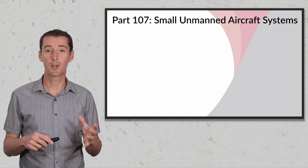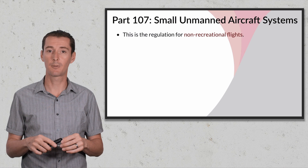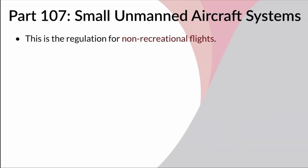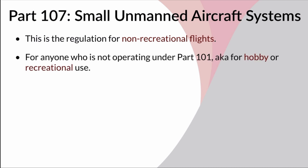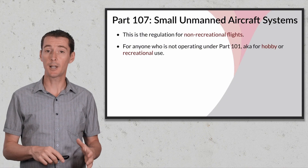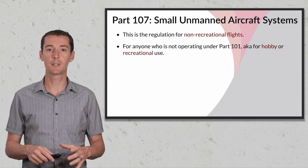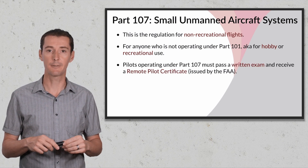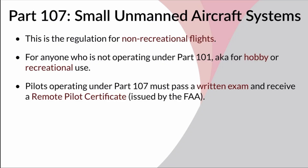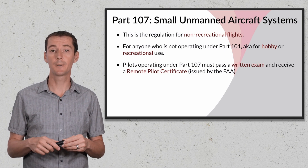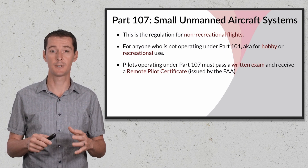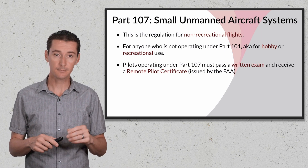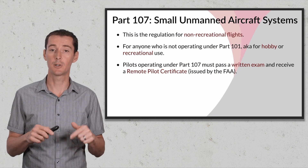The next thing we have is Part 107 — small unmanned aircraft regulation. This is the regulation for everything that is not recreational. Part 101 is recreational flight; Part 107 is non-recreational flight. Anyone who's not operating under Part 101, anyone who's not doing stuff for fun, falls under Part 107. If you operate under Part 107 you have to get a remote pilot certificate, issued by the FAA, by passing a written exam. I also have a course available that has helped hundreds of people pass that test — check the link in the description.